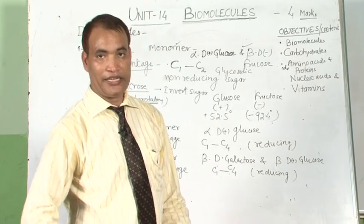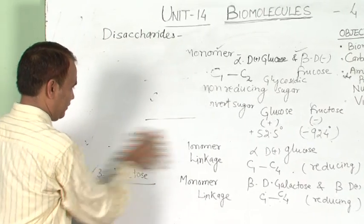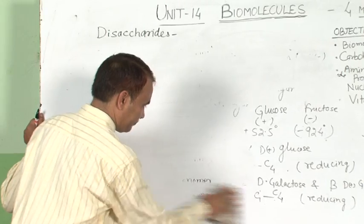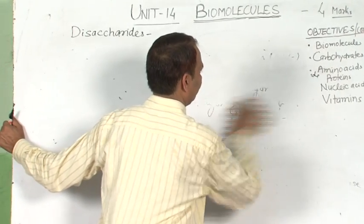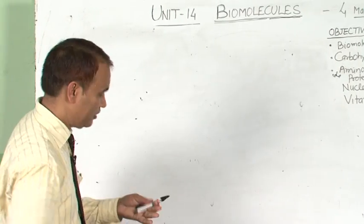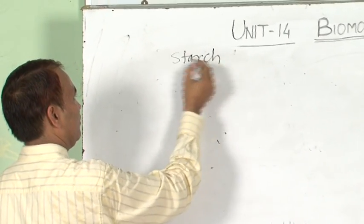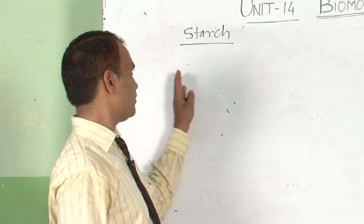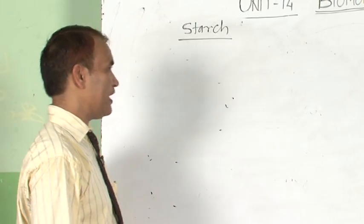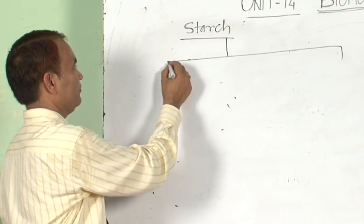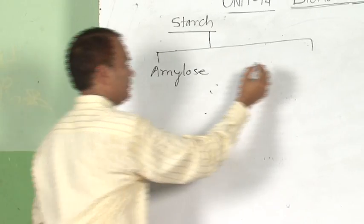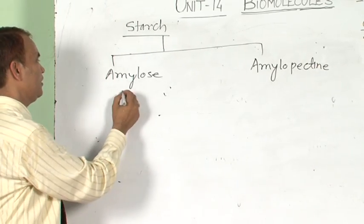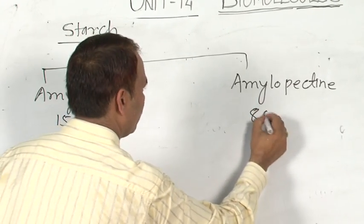Now we study polysaccharides. There are two polysaccharides in our syllabus for this chapter: starch and cellulose. Starch is a polymer of D-plus-glucose — on hydrolysis, starch gives D-plus-glucose. Starch has two components: amylose and amylopectin. Amylose forms 15 to 20 percent of starch, and amylopectin forms 80 to 85 percent.